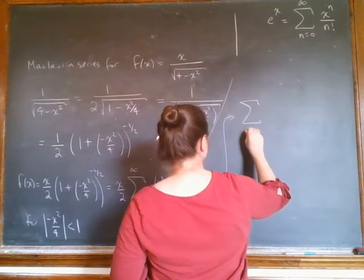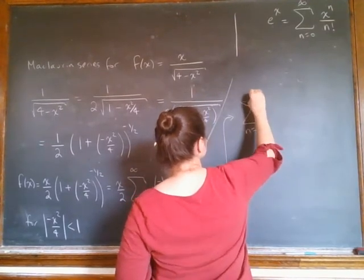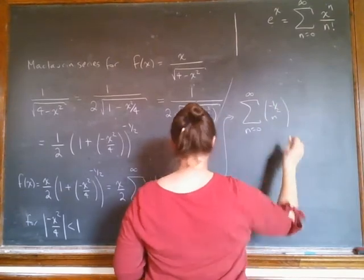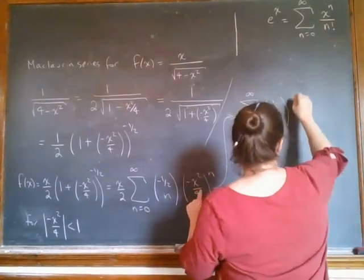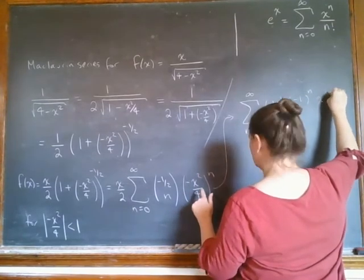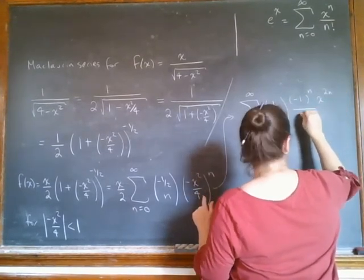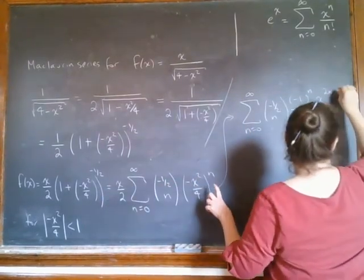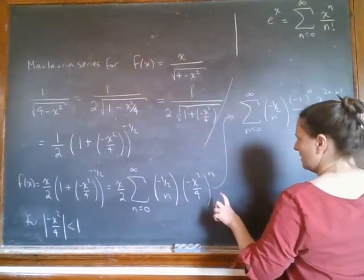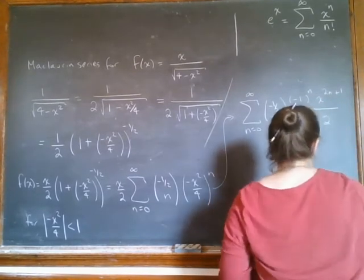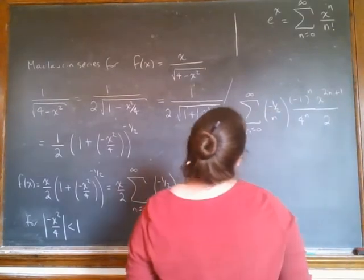So what I have here, n equals 0 to infinity, minus 1 half choose n, I've got minus 1 to the n, x to the 2n. This was 4 to the n, but I pulled in, now I'm pulling in my x over 2, so it's going to be plus 1. This 4 to the n, and I even can just put a 2 there. That's not very attractive.